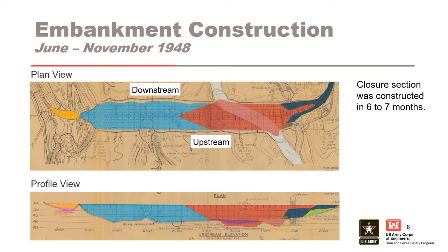In June 1948, the Pateau River was diverted through the outlet works. Over the next six to seven months, the channel was filled and the closure section of the embankment was constructed. The portion of the embankment shaded in blue was allowed to sit for 14 months prior to reservoir impoundment. The closure section, shaded in red, was completed approximately one and a half to two months prior to reservoir impoundment.